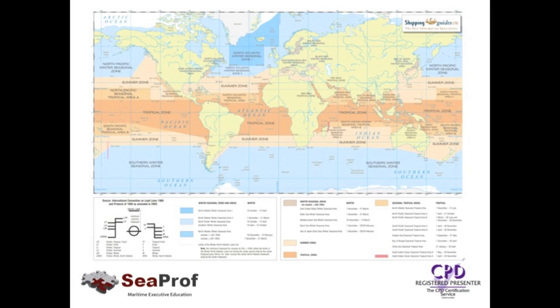What we see now is a seasonal load line map. It depicts all the different load line zones throughout the world at all times of the year. The ship's master must have one of these maps on board so that he can ensure his vessel is loading to the correct mark at the right time of year, and that when he moves from one zone to another, his vessel will be at the correct load line mark at precisely that time. If he fails to do so, he will be in contravention of the load line convention and can be prosecuted.